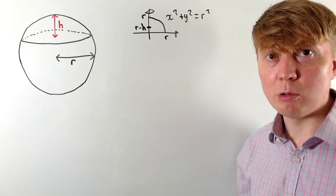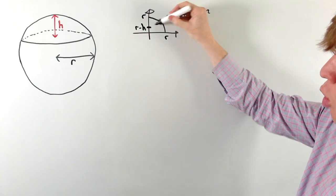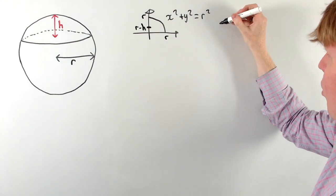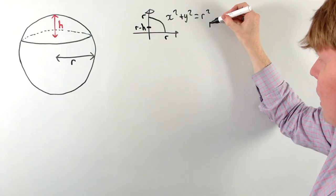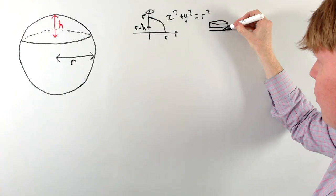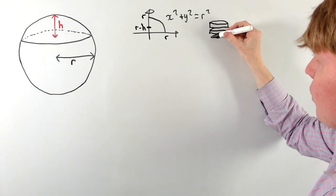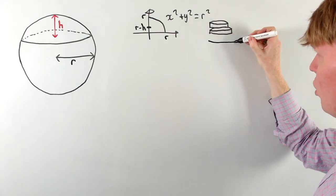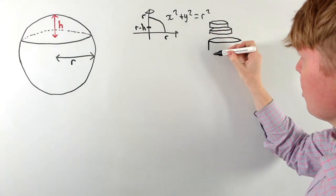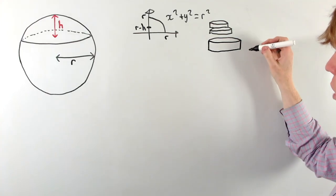To briefly explain why we use an integral: instead of taking lots of little rectangular strips, we now use an integral where we have lots of small cylinders. As we make these cylinders smaller and smaller, they add up to form the volume of the shape. We consider the volume of one of these infinitesimally small cylinders.